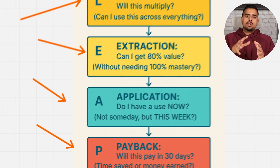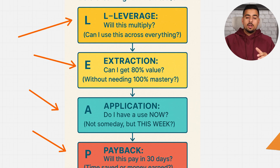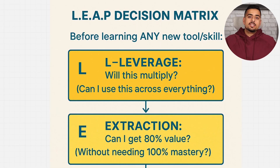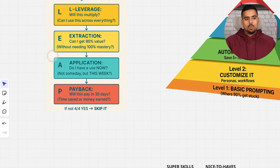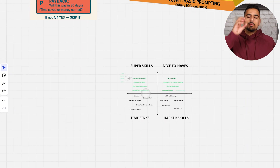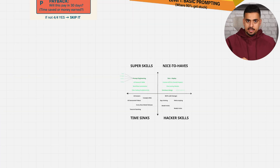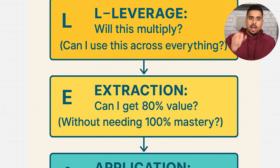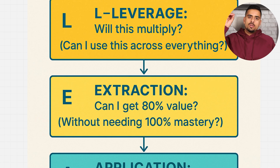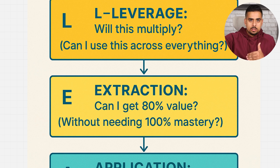This gives you a lens for looking at learning as an investment versus a hobby. L stands for leverage — can you learn a skill that multiplies and applies across the board? I'll walk through the quadrant that breaks down what is a super skill, what is a nice-to-have, and what is a time sink. The E in LEAP stands for extraction — the 80-20 Pareto principle concept, where can you derive tons of value without spending 10,000 hours to become 100% expert.